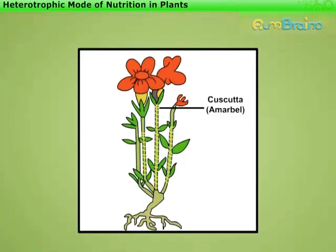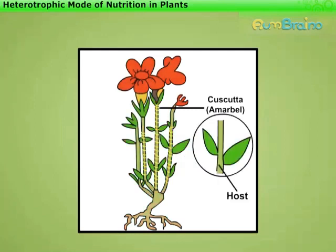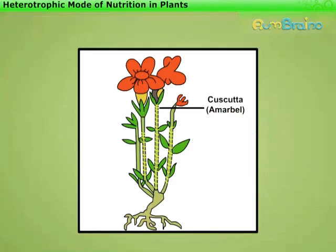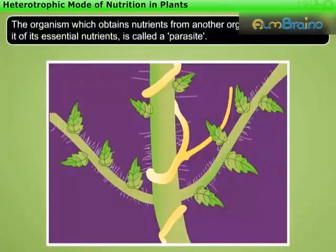For example, the Cuscuta plant, also called Amarbel. Since this plant does not have chlorophyll, it climbs on another plant and takes ready-made food from it. The plant on which it climbs is called the host. The organism whose essential nutrients are deprived by another organism, such as a parasite, is called the host. Since this plant deprives the host of its valuable nutrients, it is called a parasite.